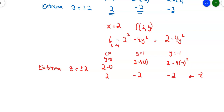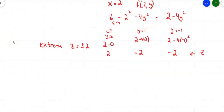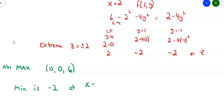Now we pull it all together. Out of all the numbers—6, 2, and −2—the 6 is the highest. So there is an absolute max at (0, 0, 6). As for the absolute mins, the absolute min is −2, and that happens at x = ±2 and y = ±1. So there are actually 4 points: (2, 1, −2), (−2, 1, −2), (2, −1, −2), and (−2, −1, −2). That's one way to do it using x and y values directly.